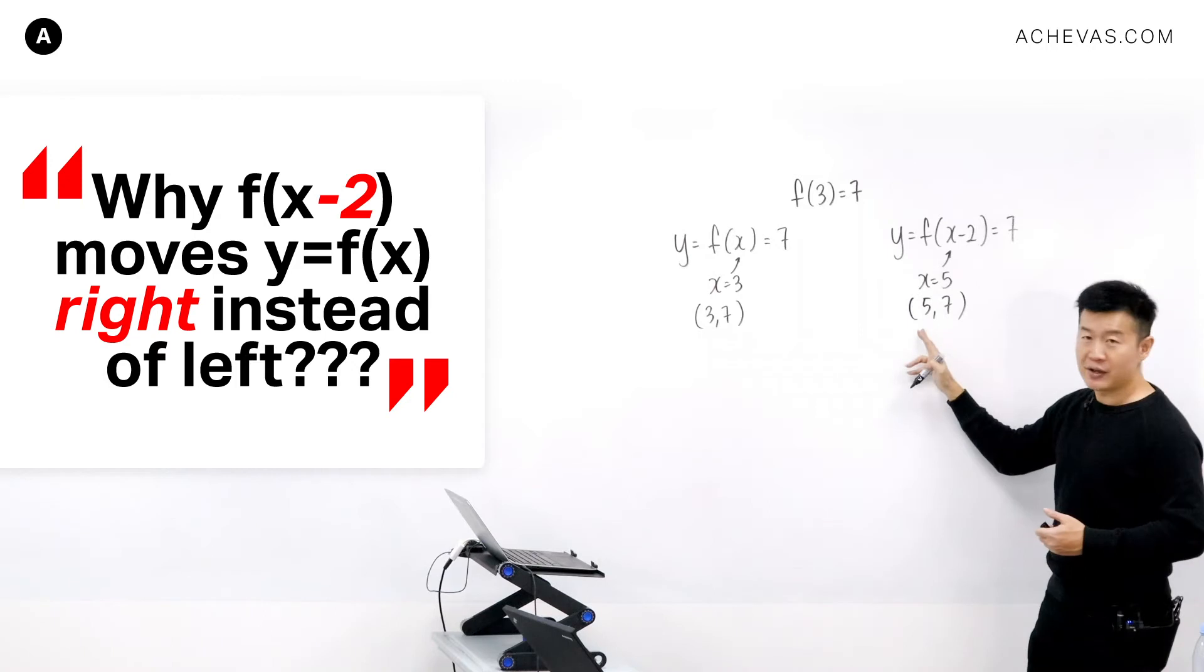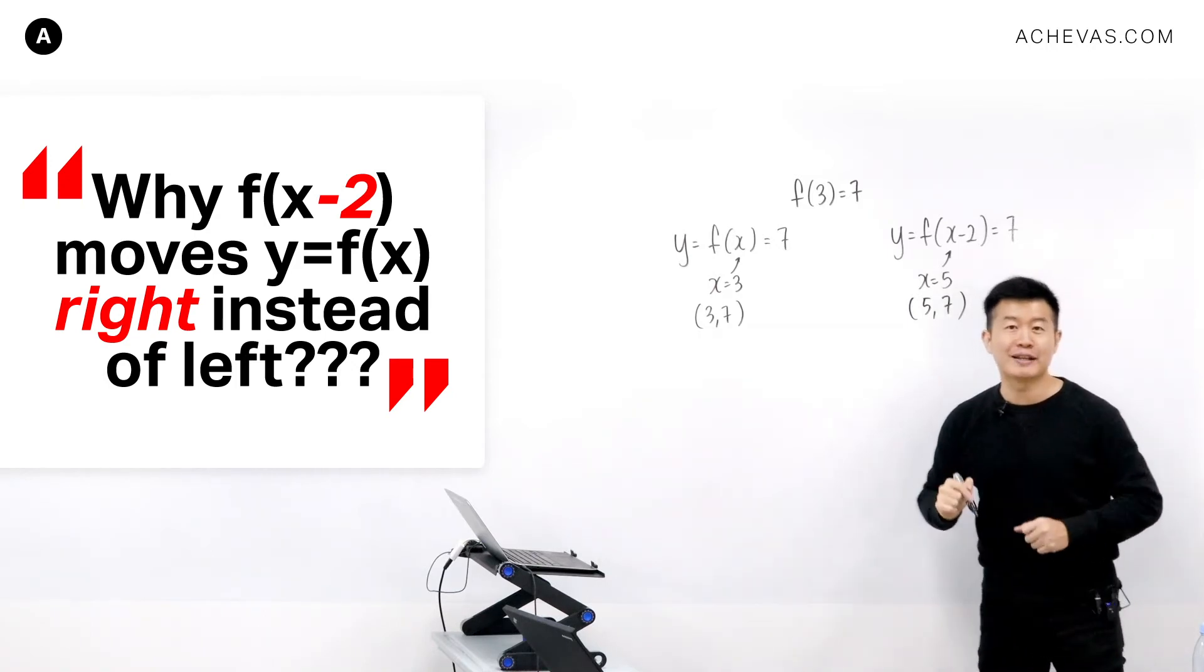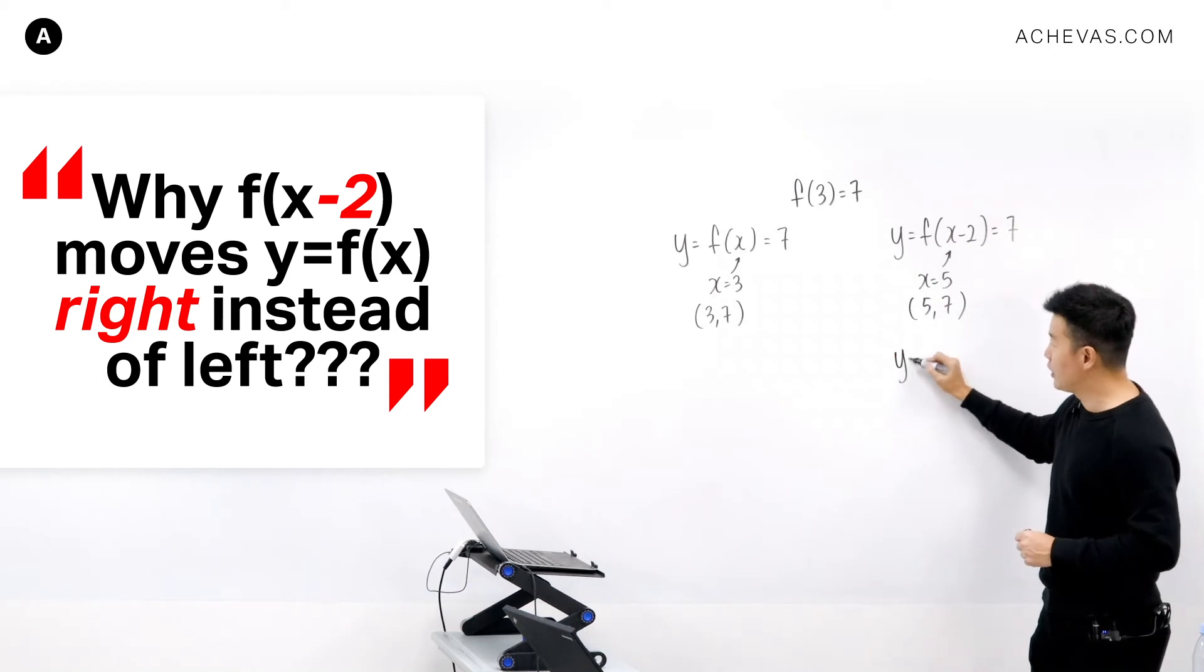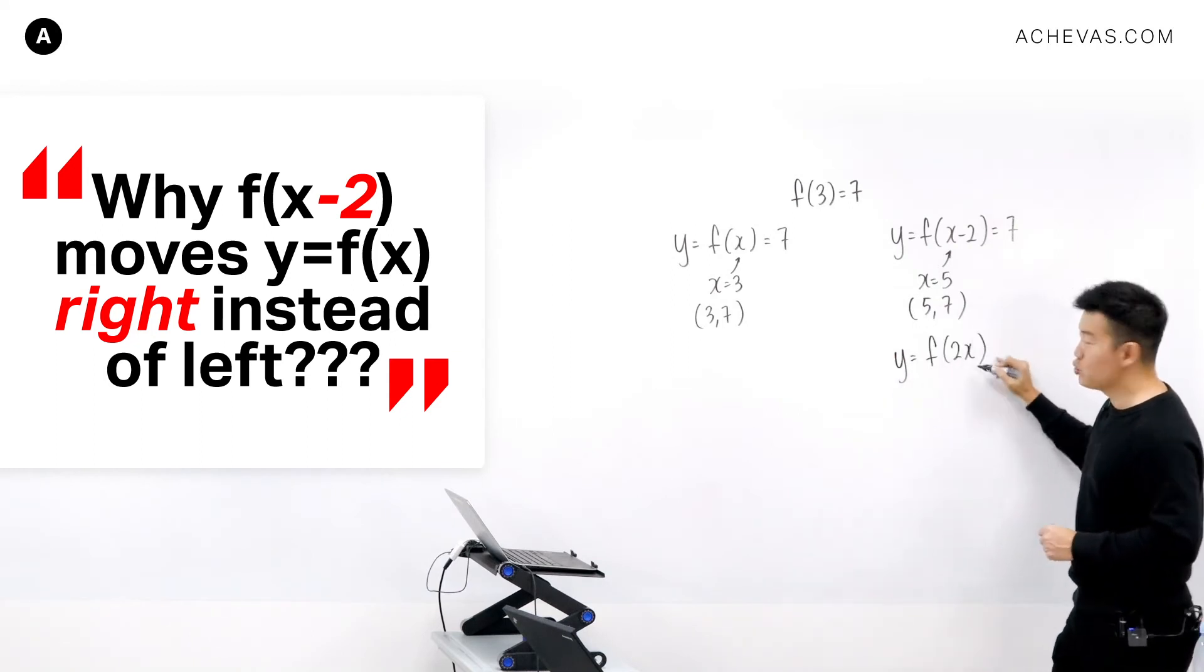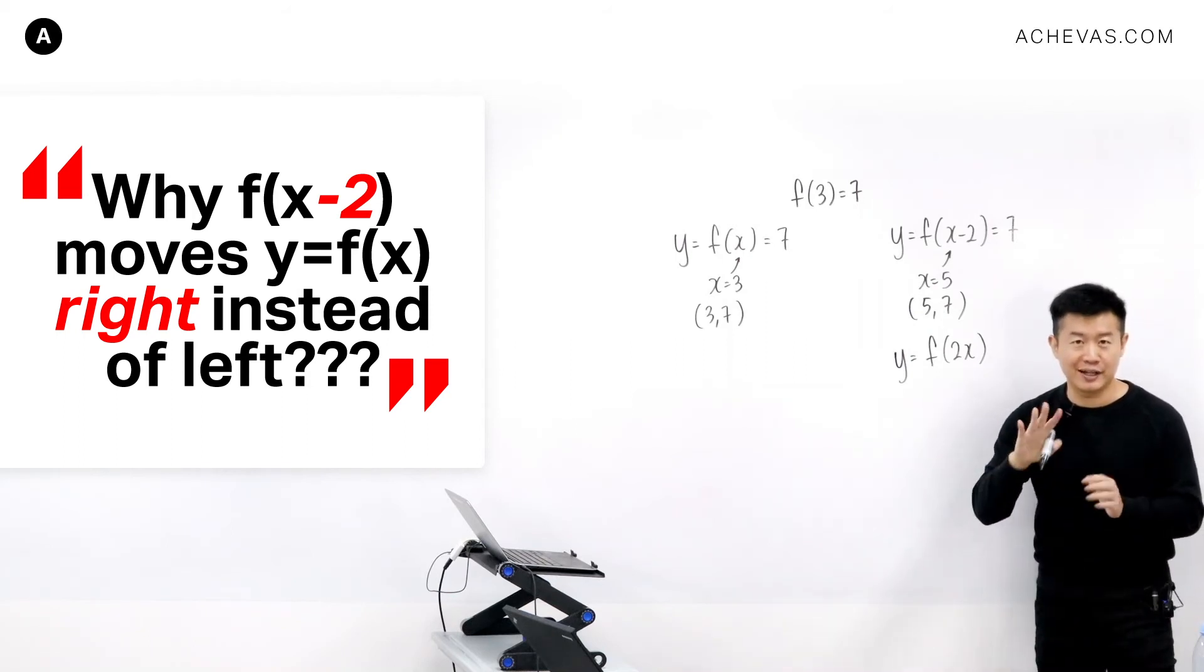So from 3 becomes 5, it is a translation of 2 units to the right. We can make use of the same explanation for the graph of y equals f(2x). So is this an expansion or is this a compression? Let's find out.